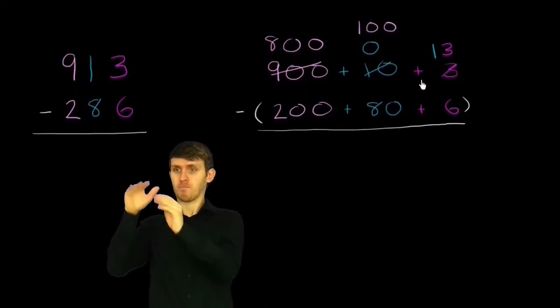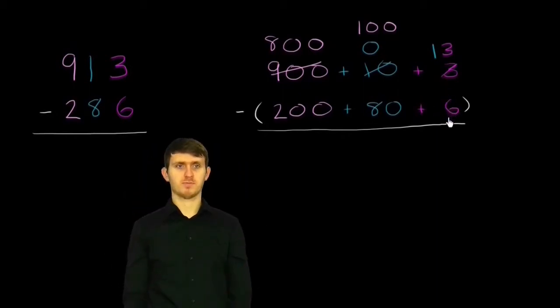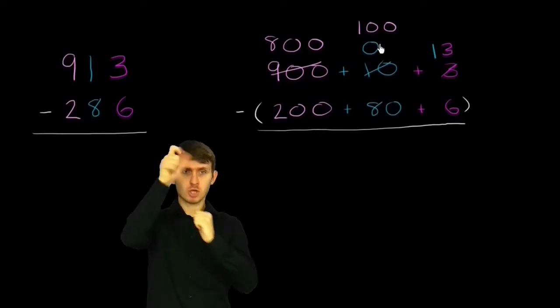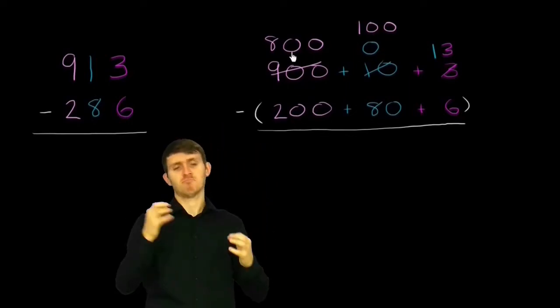Why is this valuable? Well, now in every column, I'm subtracting a smaller number from a larger number. You might say, wait, isn't there a positive sign here? But we have this negative out here. So we're subtracting 6 from 13. We're subtracting 80 from 100, subtracting 200 from 800.